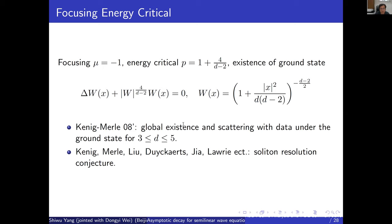This works basically because of the rigidity of the ground state: the equation is scaling-invariant, so if something bad happens you can blow up the solution; but since energy is conserved and the energy is below the ground state, that excludes the possibility that the solution blows up, establishing global existence. What remains is what happens for general data with energy above the ground state — the big open problem.